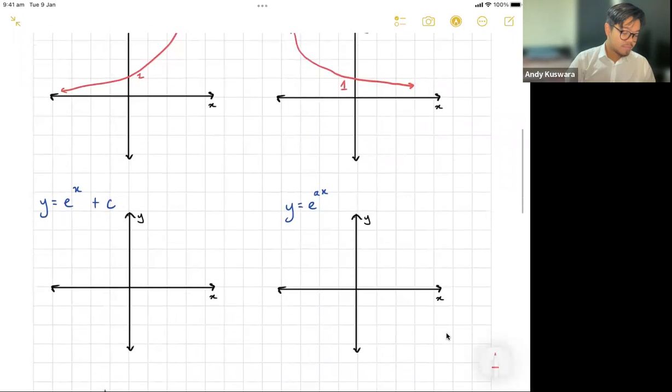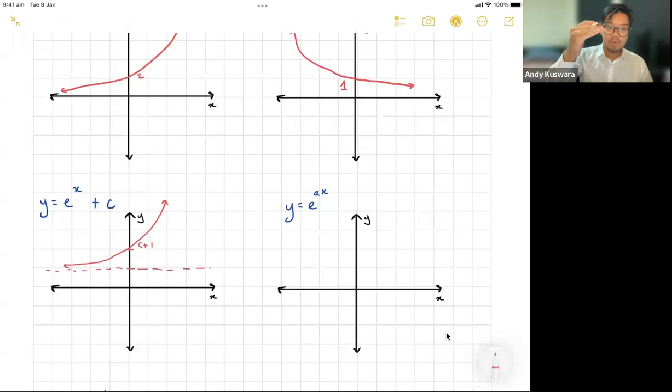If I have e to the x plus c, it's going to shift it either up or down. So in this case here, wherever it goes is just if this is c plus one, and that would be your graph this time. Hopefully you remember that it's still going to have an asymptote here, but because I've shifted the whole thing up by one, now my asymptote is at x equals one.